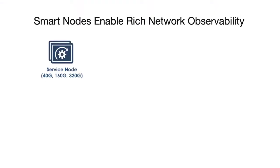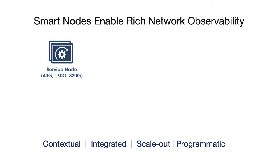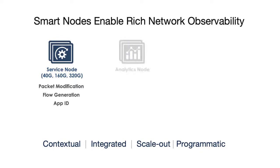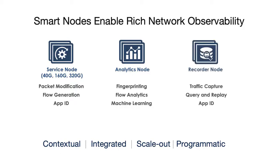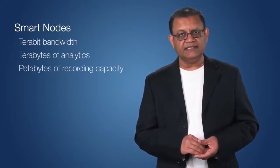Additionally, DMF provides built-in advanced processing nodes, including service node software for packet processing, optimization, and flow generation; analytics node software for deep context-aware traffic analysis and machine learning; and recorder node software for full packet capture, query, and replay with built-in application identification. These smart nodes can be clustered for scale-out deployment, delivering terabit bandwidth, terabytes of analytics, and petabytes of recording capacity.